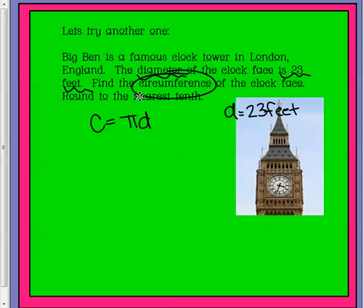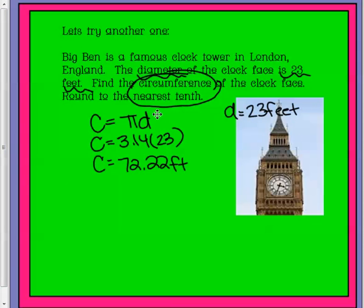What do they tell us, though, that we need to do? We need to do the circumference to the nearest tenth. So when I plug in 23 times pi, I get 72 and 22 hundredths feet. Is that a tenth? Absolutely not.